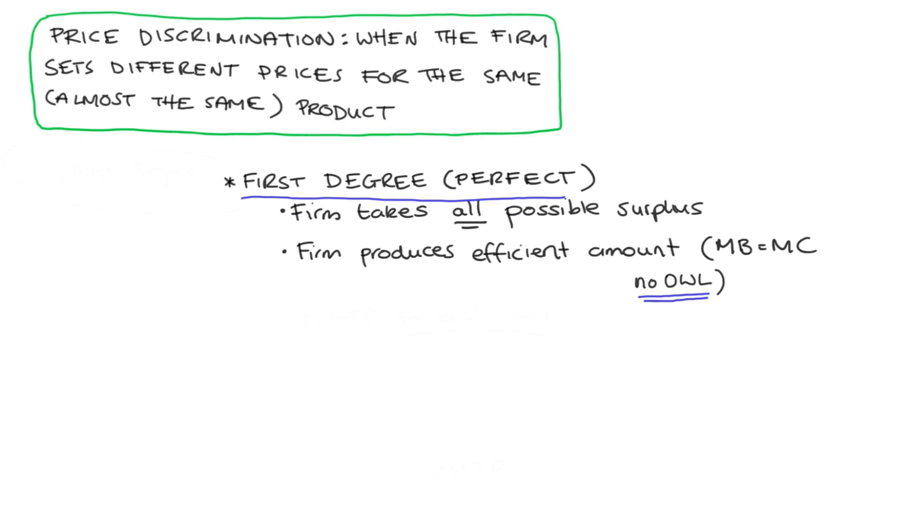Now, there are a number of strategies that the firm can use in order to do this or to approach this ideal. Probably the most common way that is mentioned in textbooks is just to charge the willingness to pay for each unit. So we charge price equal to willingness to pay for each unit sold.